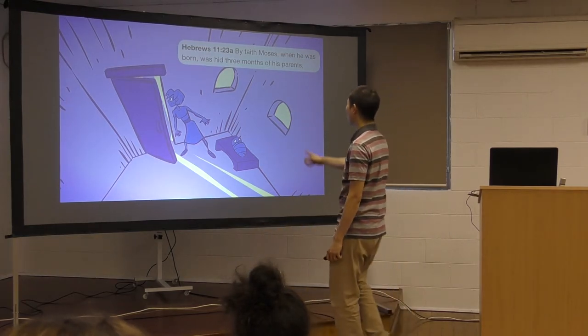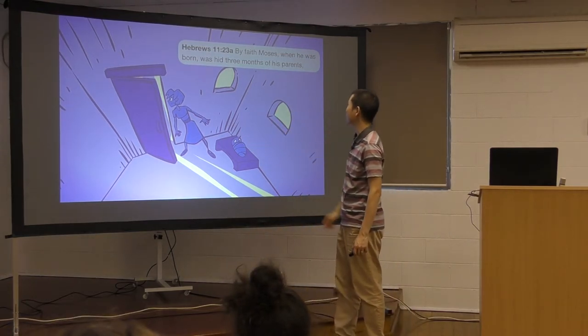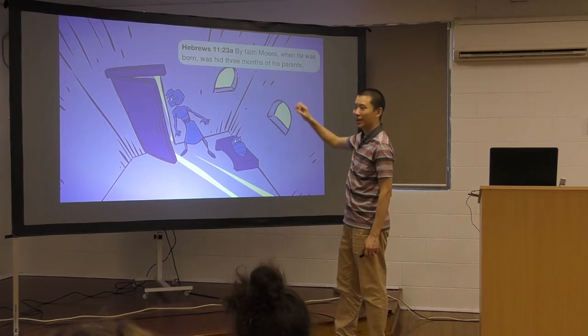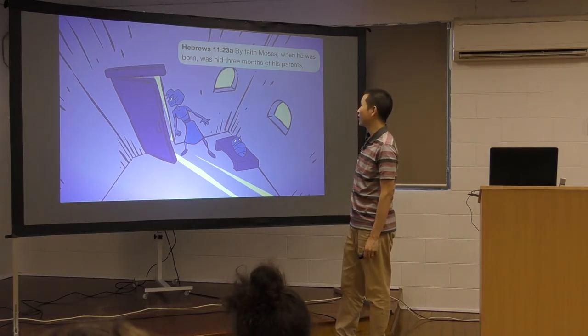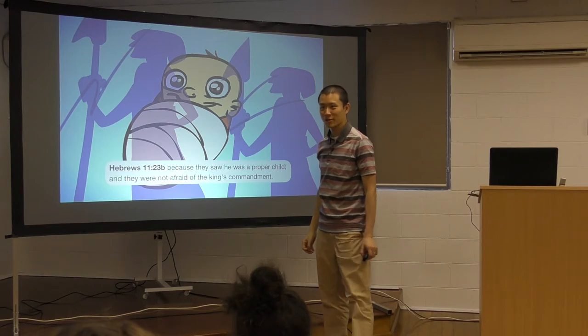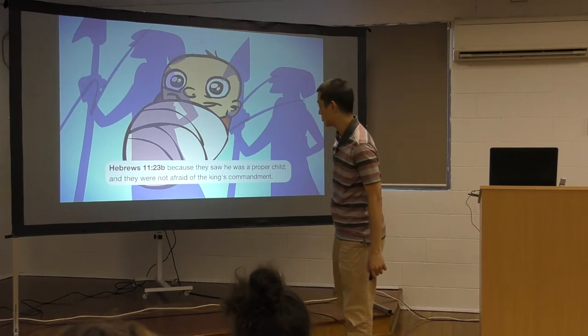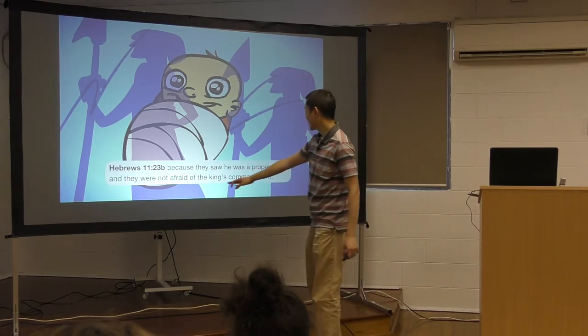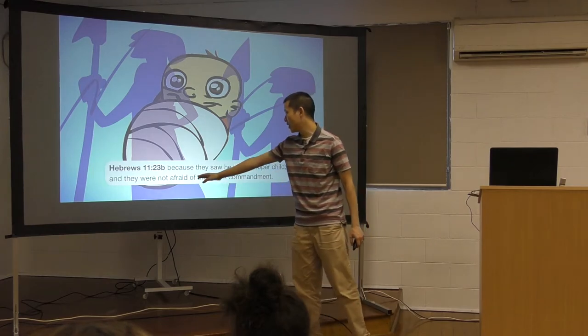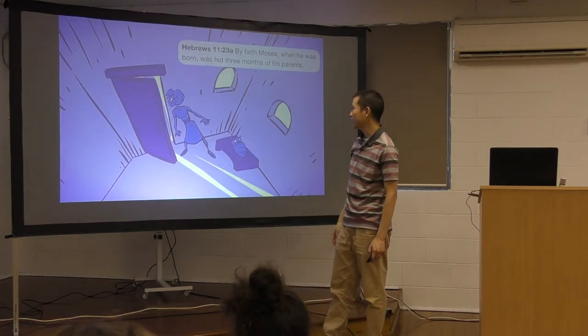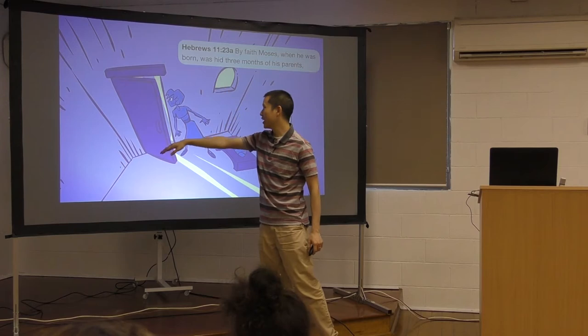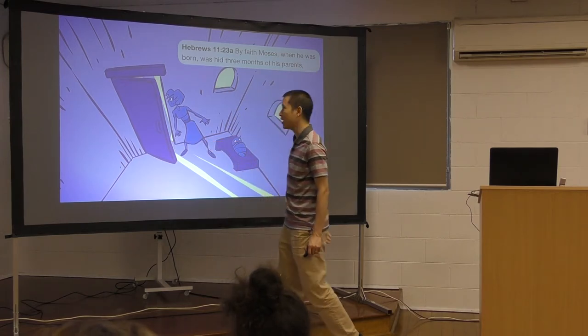Now we're going to Moses. By faith, Moses is when he was a baby. When he was born, was hid three months of his parents. Why? Because they were trying to kill all the children in Egypt that day. Because they saw he was a proper child and they were not afraid of the king's commandment. See, so they weren't scared of the king. Were they hiding? Because they don't want them to find baby Moses.